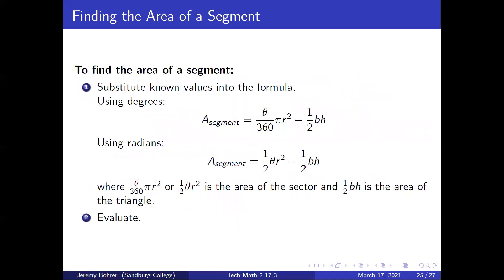To find the area of a segment, substitute known values into the formula. Using degrees, the area of the segment equals theta over 360 times pi r squared minus one half bh. Using radians, the area of the segment equals one half theta r squared minus one half bh. Here, theta over 360 times pi r squared or one half theta r squared is the area of the sector, and one half bh is the area of the triangle. Then evaluate.